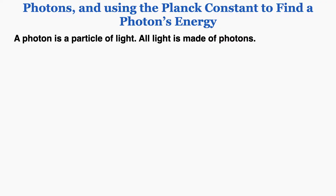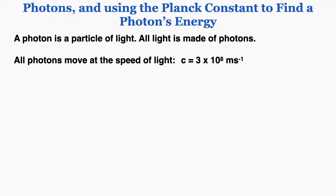All light is made of photons. All photons move at the speed of light, which is 3 times 10 to the eighth meters per second. We use the symbol lowercase c to stand in for that constant.